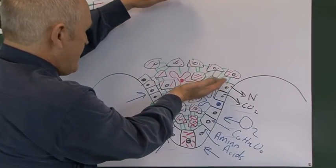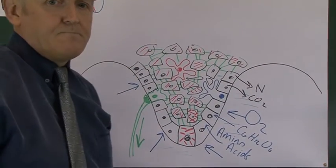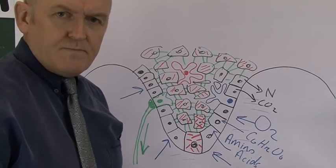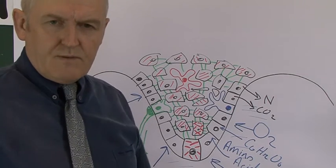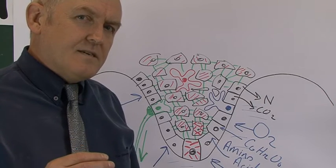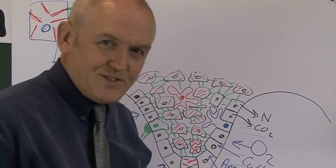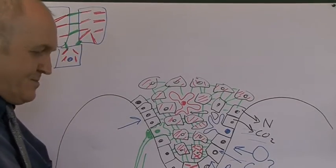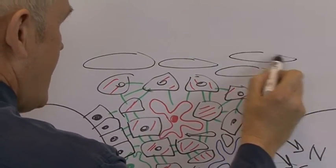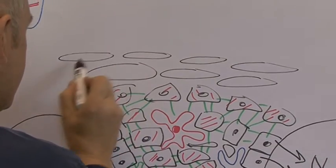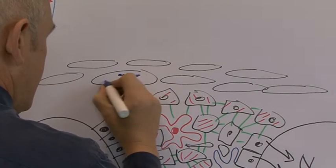As the cells undergo apoptosis, they become flatter — partly because they're dying, and partly because pressure from above flattens them. Above the stratum spinosum is the stratum granulosum, where the cells are flatter. The name means 'little granules.' The cells have become flattened, the nuclei become less distinct, and there are little dark-staining granules visible within them — hence the name stratum granulosum.